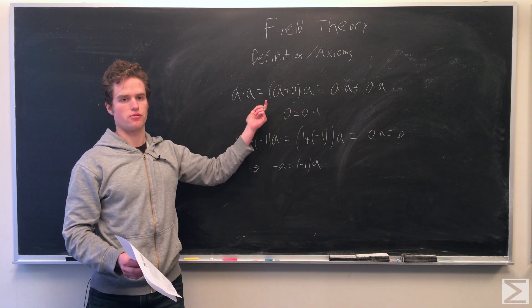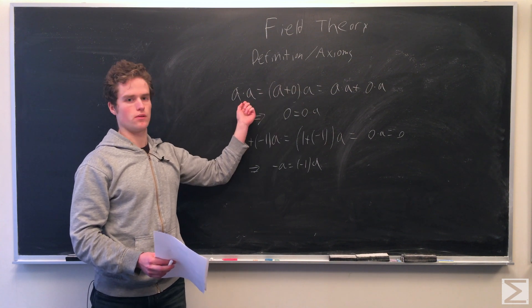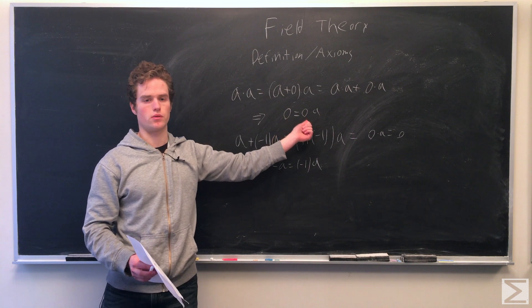Because it's an abelian group under addition, we have inverses for any elements we're adding. So subtract off the inverse of A times A from both sides, and we get zero equals zero times A.